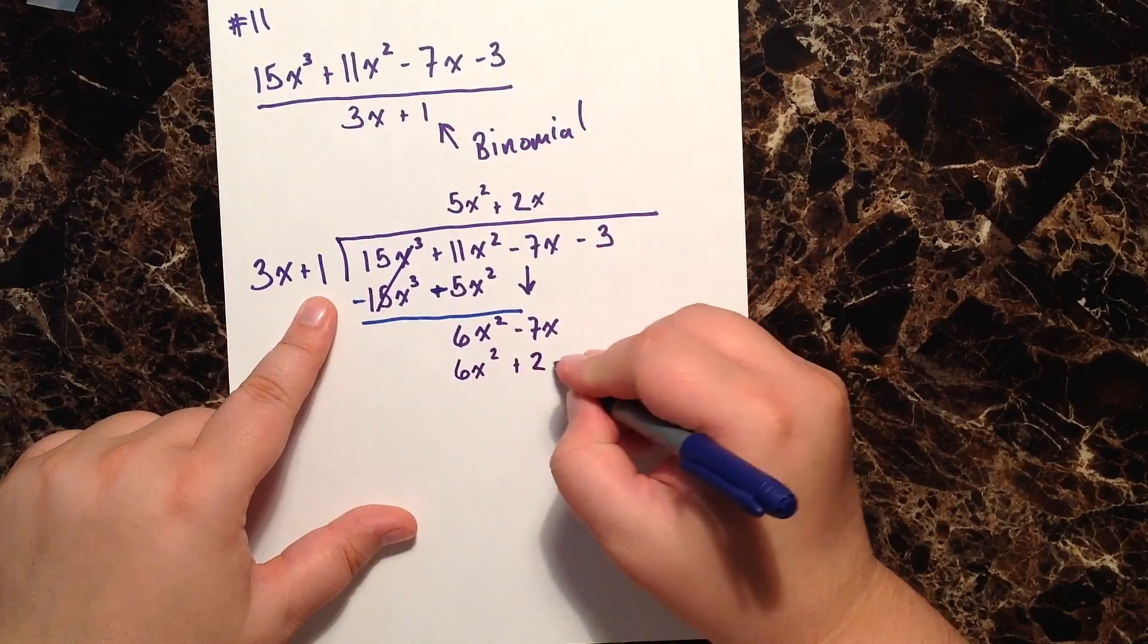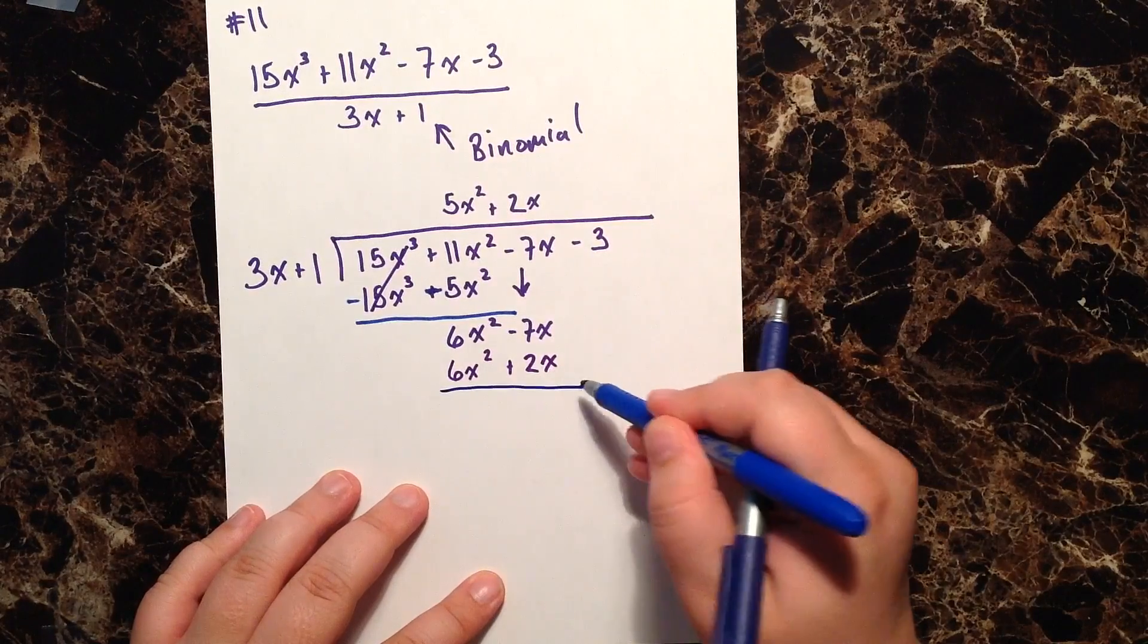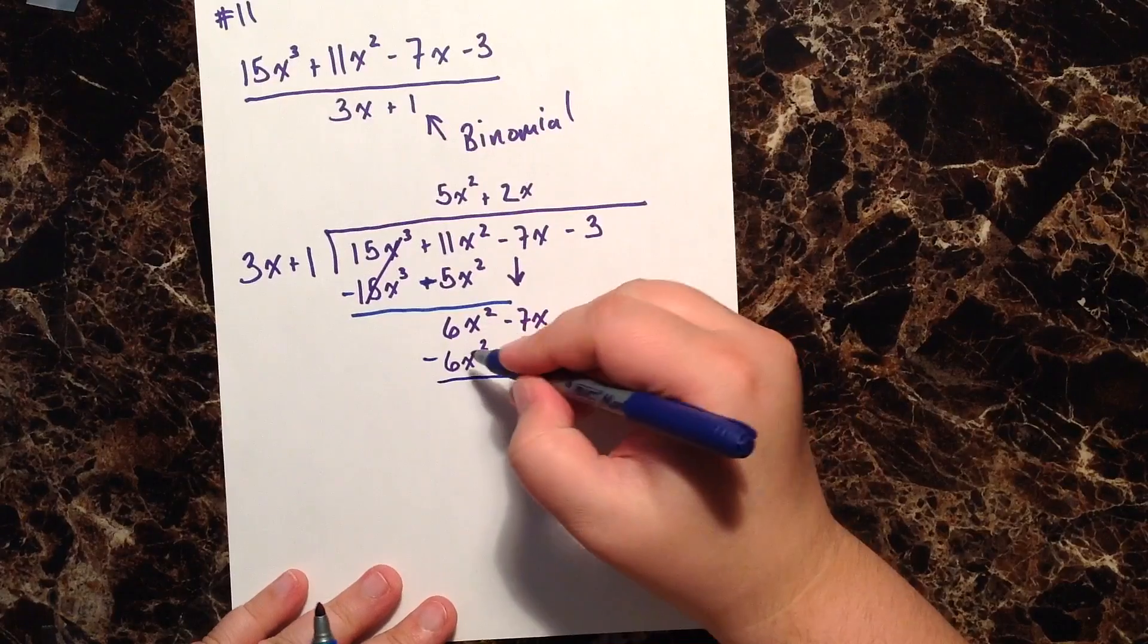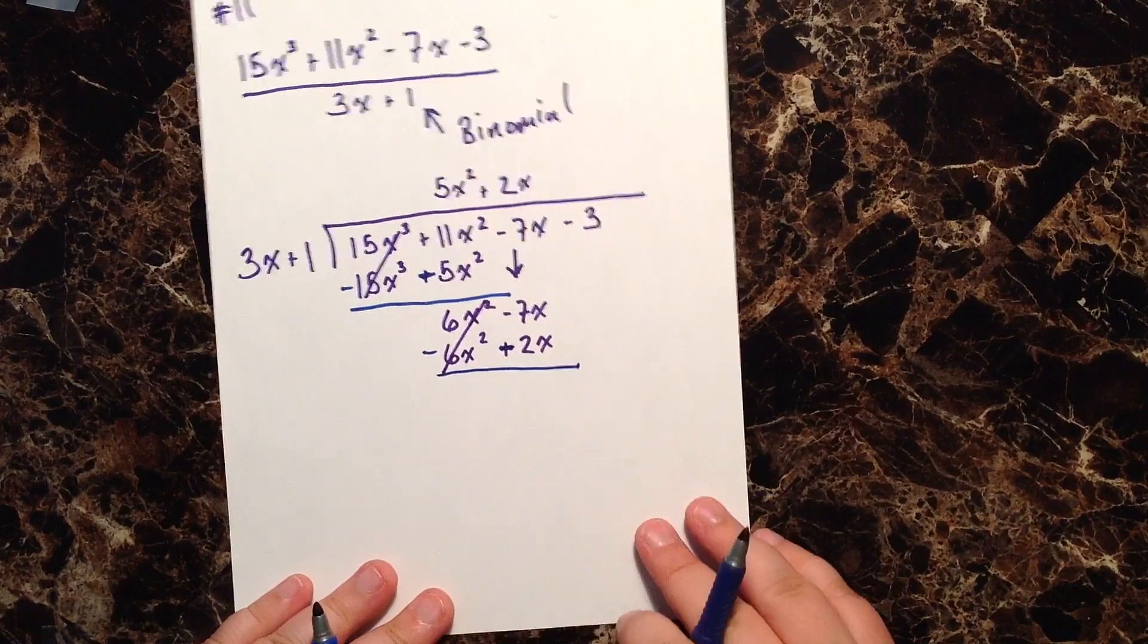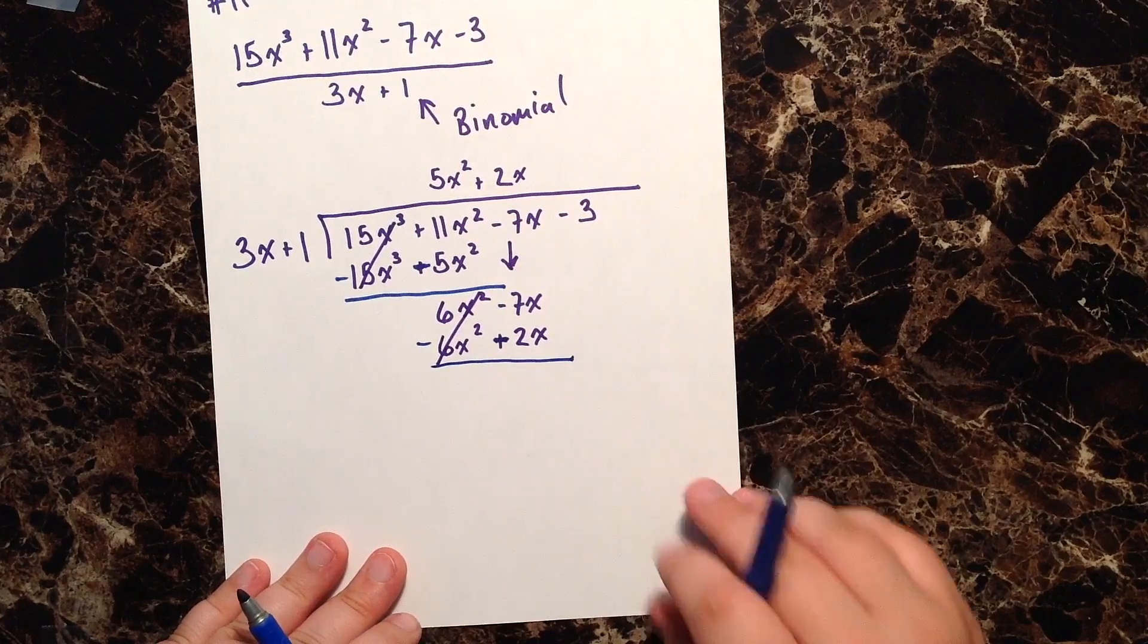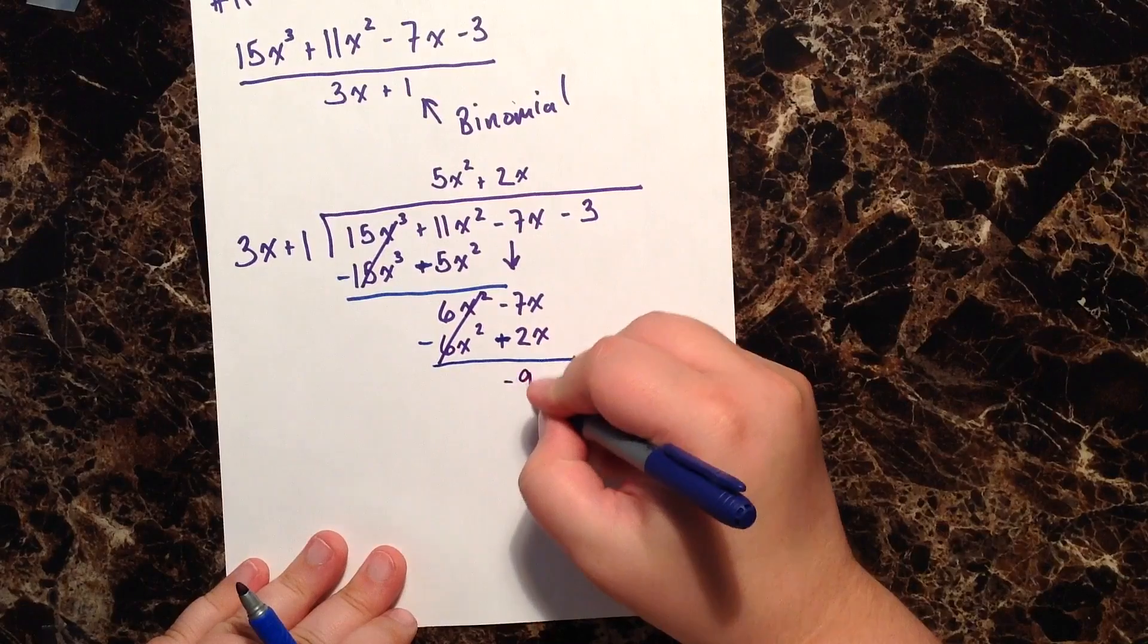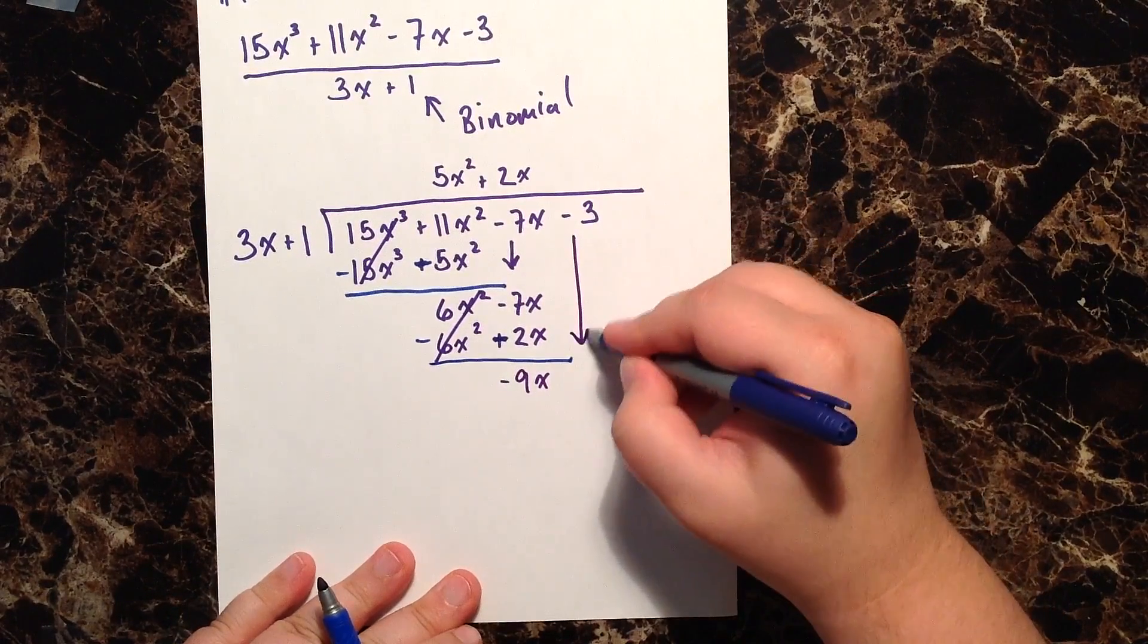And now I do 2x times 1, gives me 2x. Again, draw my line, change my signs. And you see again this first column cancels out. If that column isn't canceling out when you draw your line and change your signs, that's when you have to go back and make sure you've done your math correctly. Well what's negative 7x minus 2x? That's negative 9x. I'm gonna bring down our negative 3 and start the process again.